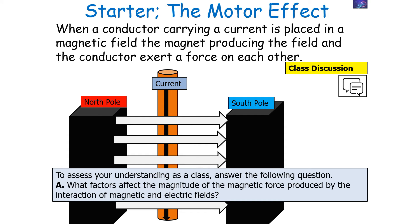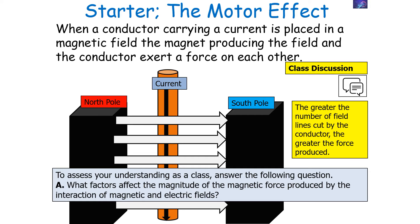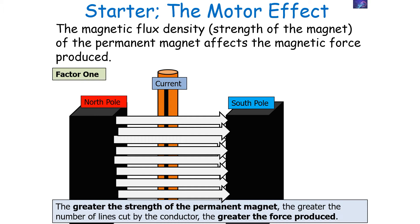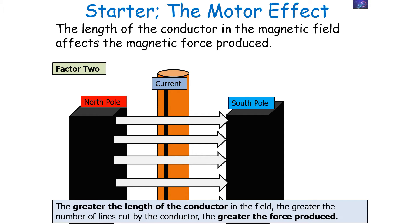What factors affect the magnitude of the magnetic force between the permanent magnet and the electromagnet? The greater the number of field lines cut by the conductor, the greater the force produced. The first factor is the magnetic flux density, or magnetic field strength — if there are more field lines per unit area, more field lines are cut. This is linked to the strength of the permanent magnet: the stronger the permanent magnet, the greater its magnetic field strength, the greater the number of field lines cut, and the greater the magnetic force produced. The second factor is the length of the conductor in the magnetic field.